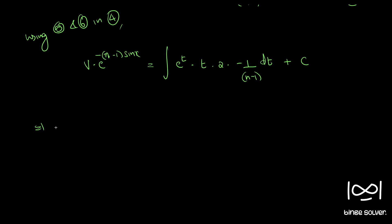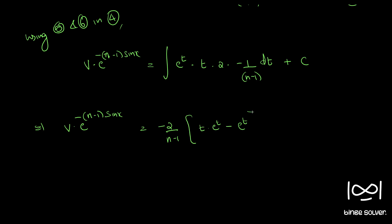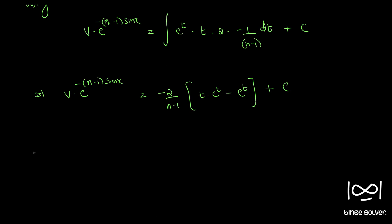So we have v times e raised to minus (n minus 1) sin(x) equals minus 2 by (n minus 1) times the integral of e raised to t times t dt. We integrate by parts: first function t times the integral of the second minus the integral of e raised to t, which again becomes e raised to t, plus C.